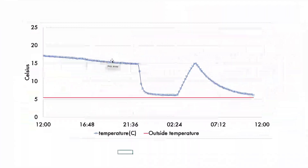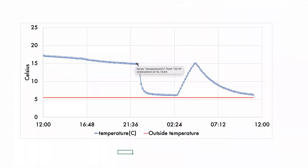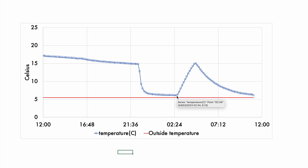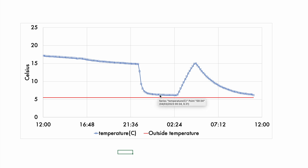We had the thermometer in the house and it was showing anywhere between 15 and 17 degrees. Taking it to the shed, the temperature goes down very quickly and it now measures something like 6 degrees Celsius.